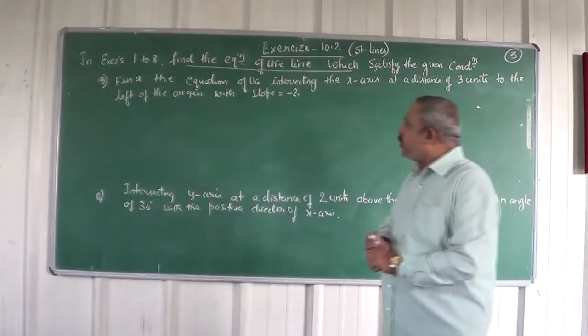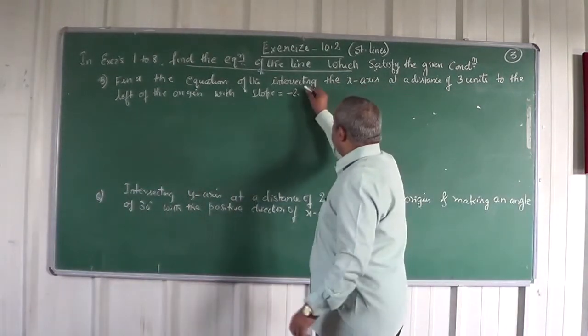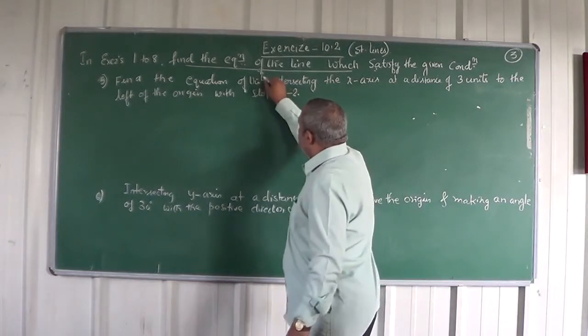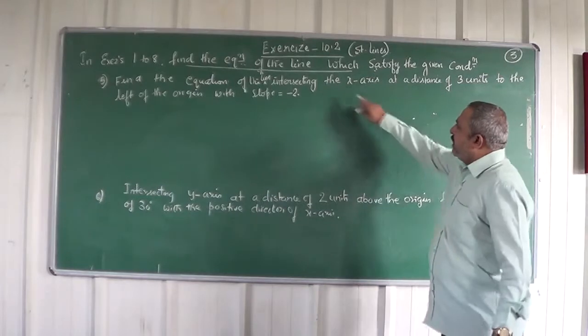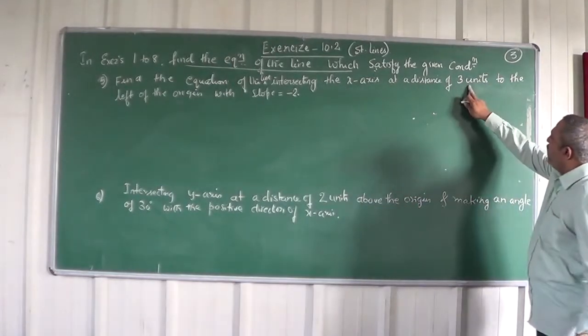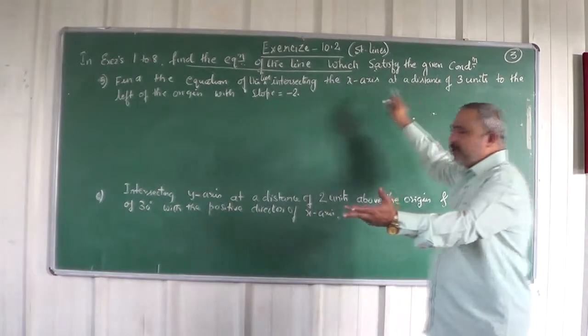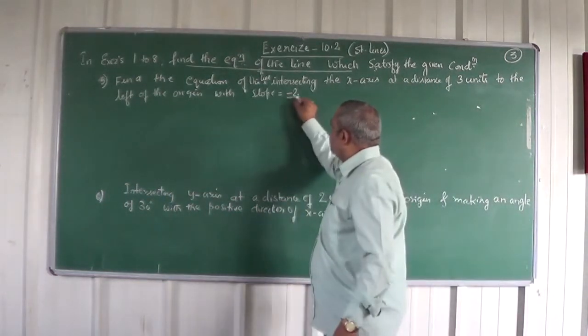Find the equation of the line intersecting the x-axis at a distance of 3 units to the left of the origin, with slope equal to minus 2.